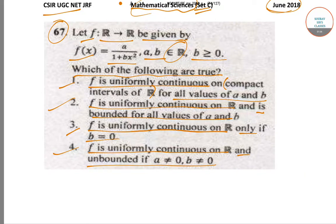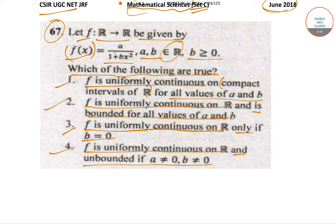Now it has been given that f: R → R, f(x) is given by a/(1 + bx²) where a, b belongs to R and b ≥ 0. For x which belongs to the set of real numbers, 1 + bx² is never equal to 0.